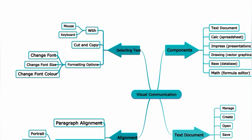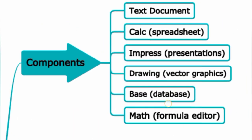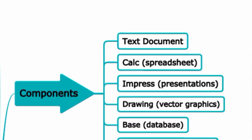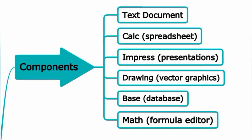Visual Communication — first, the components. The first component is Writer, a text document tool. The writer creates letters, books, reports, and newsletters. The second component is Calc, a spreadsheet tool used to prepare charts for financial, statistical, and mathematical operations.